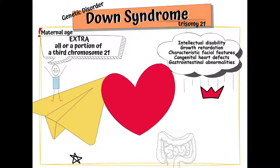Different clinical conditions are associated with Down syndrome because different systems are affected. These patients have a variety of signs and symptoms such as intellectual and developmental disabilities or neurological deficits, congenital heart disease, gastrointestinal anomalies, and characteristic facial features and anomalies.